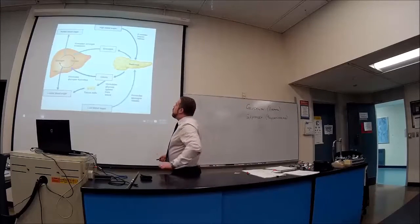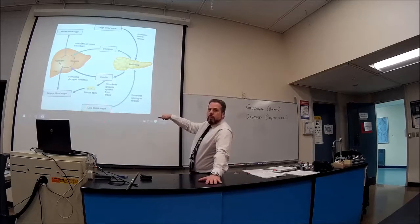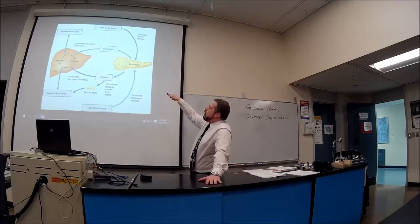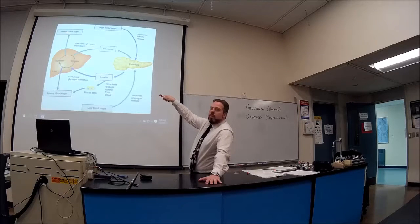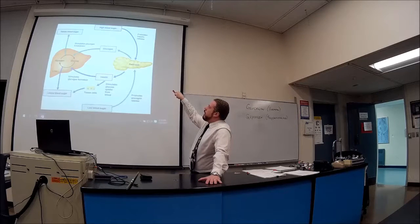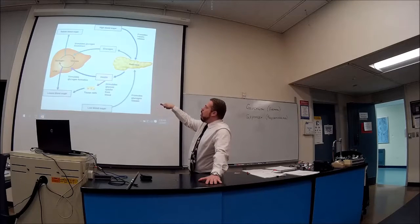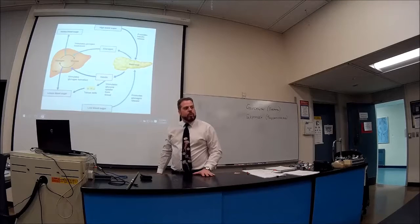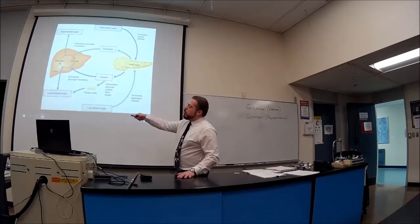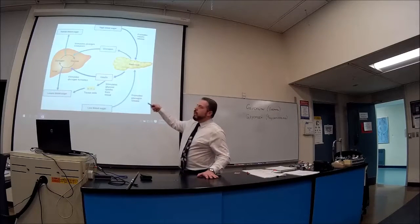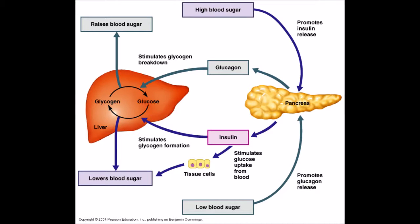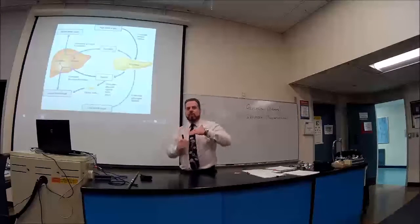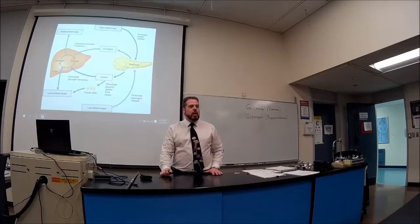Here's a summary: low blood sugar triggers the pancreas to release glucagon, which goes to the liver to break down glycogen and put glucose into the bloodstream — blood sugar goes up. If it gets too high, the pancreas releases insulin to open the doors and allow glucose into the tissues, or target the liver to store glucose back as glycogen. Either way blood sugar lowers, then the cycle repeats — it's a teeter-totter.